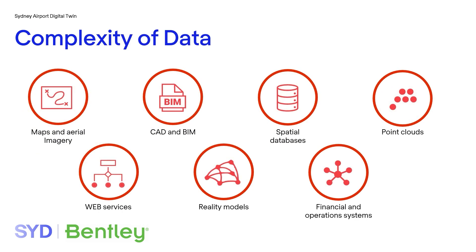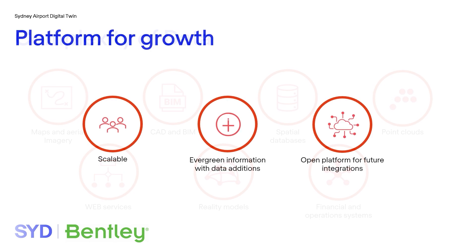The complexity of the data also poses a challenge. Many tasks on a campus require a mix of reality data, spatial data and business data for task completion. The digital twin needs to handle a multitude of data types and formats and enable management, analysis and sharing of these data sources. The digital twin must be a platform for growth — it has to scale with the user as operations grow, enable data additions and updates to maintain evergreen information, and be an open platform allowing for future integrations to data sources and third-party systems.